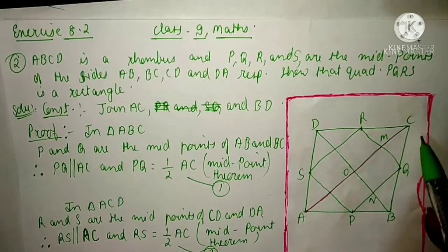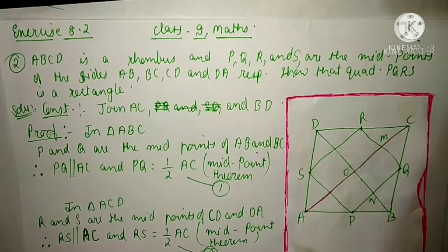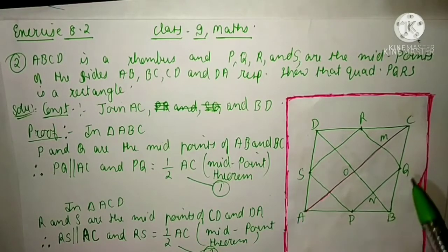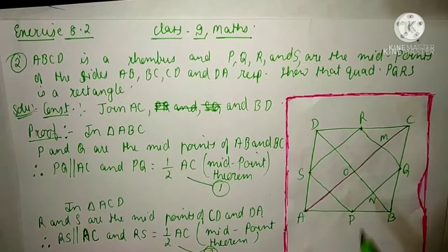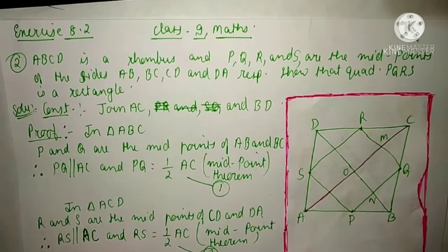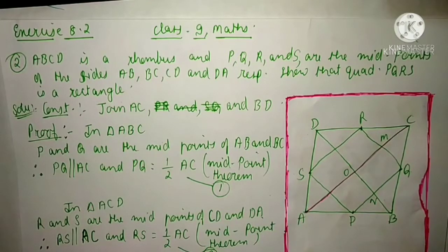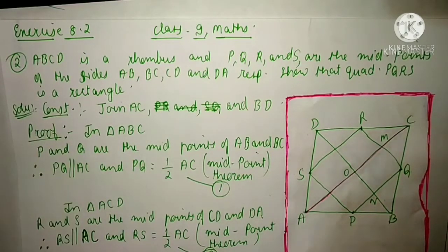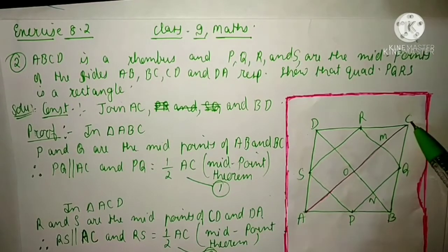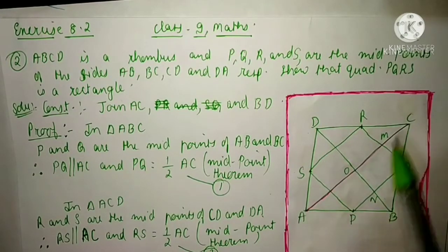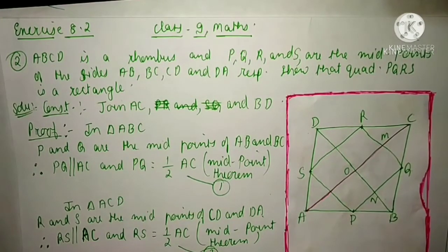P is the midpoint of AB, Q is the midpoint of BC, R is the midpoint of CD, and S is the midpoint of DA. And PQRS is a quadrilateral. We have to prove that PQRS is a rectangle. To prove that this is a rectangle, we have to prove that its opposite sides are equal and all angles are equal to 90 degrees. So first you will write what is given, then what to prove. For construction, we have joined AC and BD — these are the two diagonals of the rhombus. And we know that the diagonals of a rhombus bisect each other at 90 degrees.